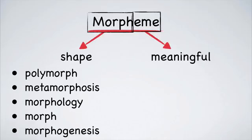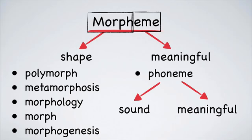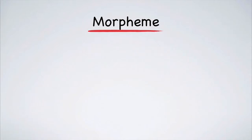Eme is a technical morpheme. It is only used in linguistics. One of the words that uses it is phoneme. Phone means sound and eme means meaningful, so a phoneme is a meaningful sound in a language. All words are made of morphemes.